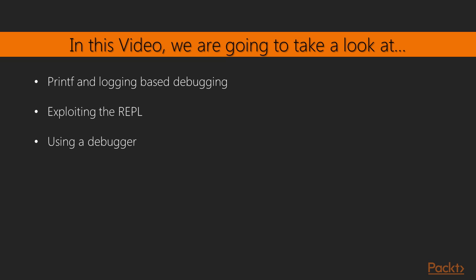Trying out things in the REPL allows you to simulate a debugging process. Of course, Julia does in fact have a debugger — actually a couple — that we can use. They're not as fancy as the debuggers you're probably used to from languages like Java or C#.